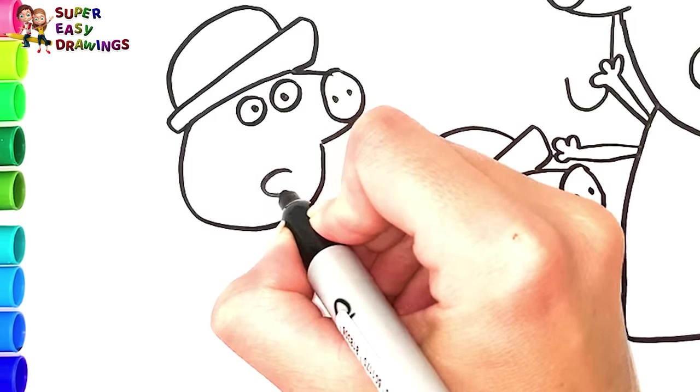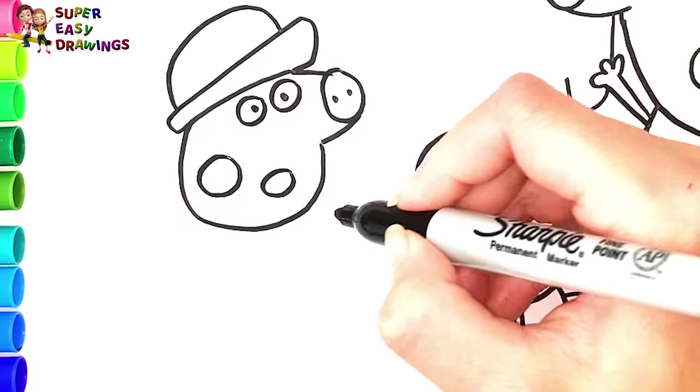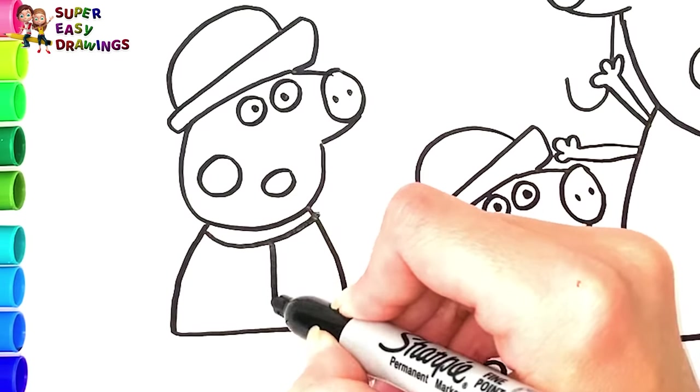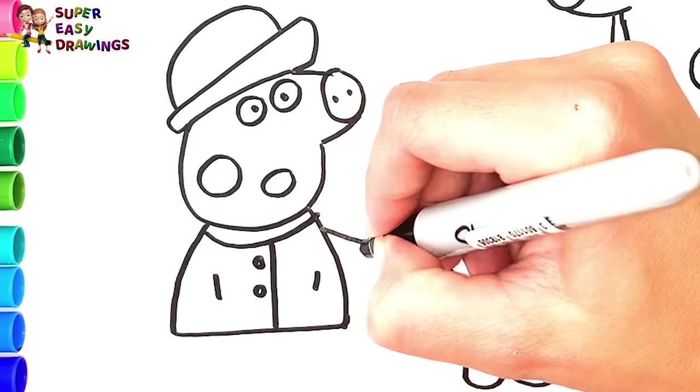I draw her mouth and a circle for her cheek. I draw her body. She is wearing a raincoat, too, and her arms.